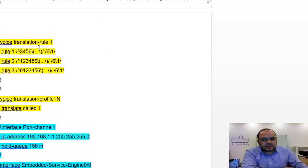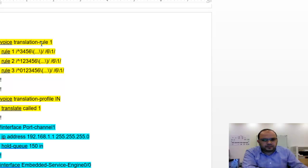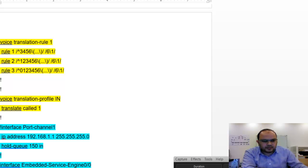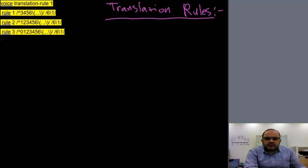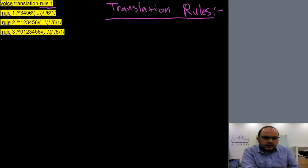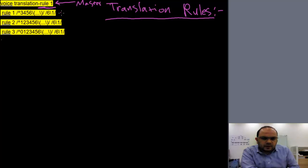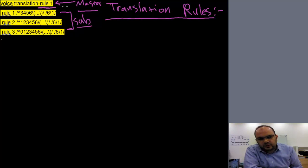In my project configuration, I created voice translation rule number one. I want to go to the blackboard for a convenient explanation. This is our translation rule — a domain translation rule which calls translation rule number one. They call this the master translation rule, and under master there are sub translation rules. So I have master and I have sub.